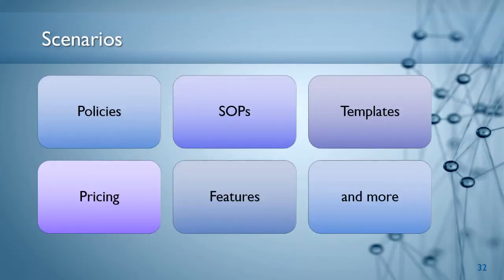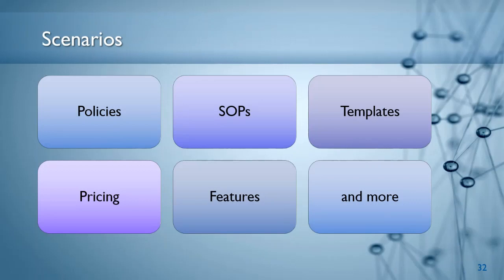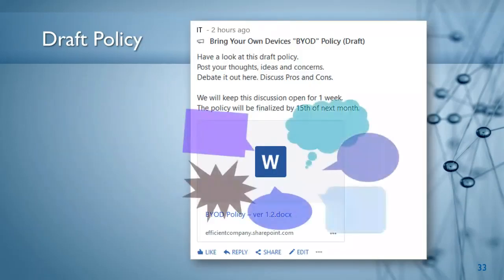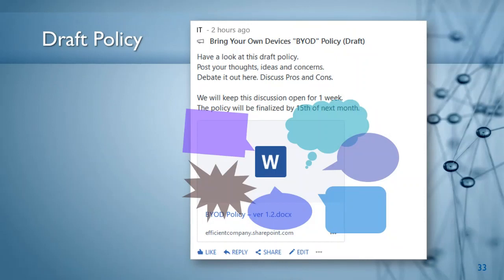The next topic is different scenarios. One example is pricing — changing the price structure of a product is sensitive, and before finalizing it you should get consensus not just from the sales team but from everyone. Any consensus-driven change is an ideal use case for Yammer. Here is an example: I posted a draft policy. People can put comments, debate, discuss, or object to it — but it's a link so people can't edit anything. Whoever created the policy gets a better understanding of what is good and what is bad and can tweak it, creating an effective policy in a short time.